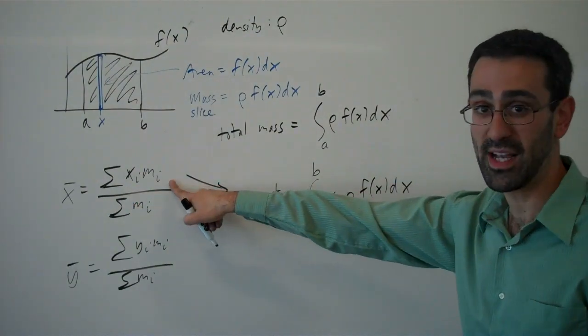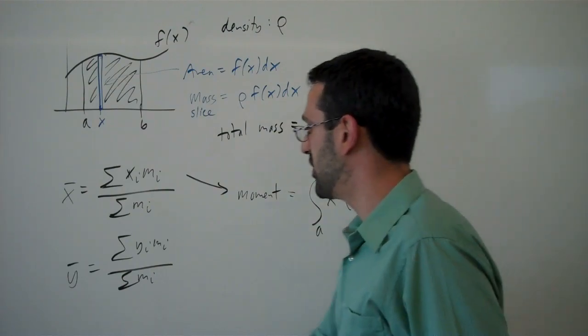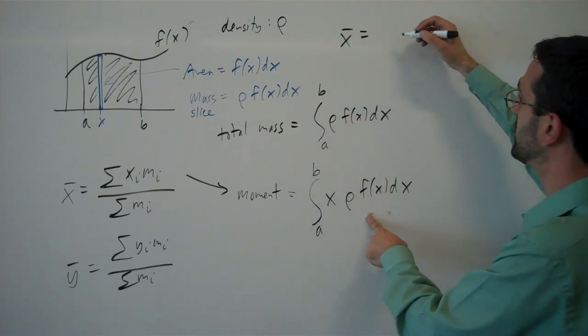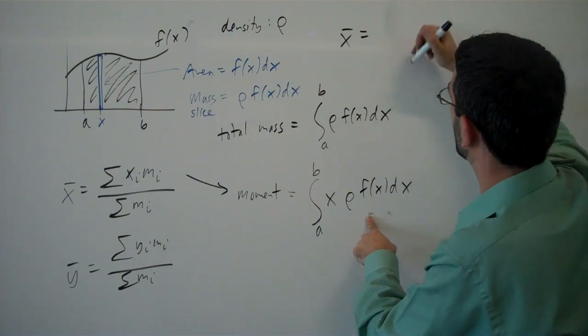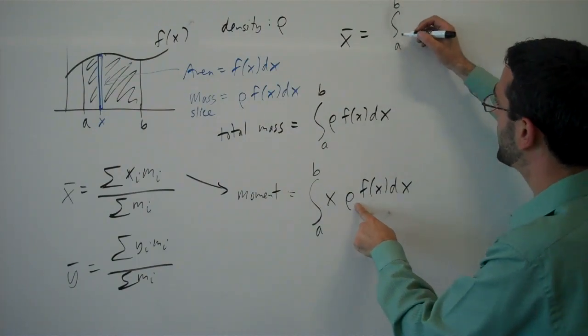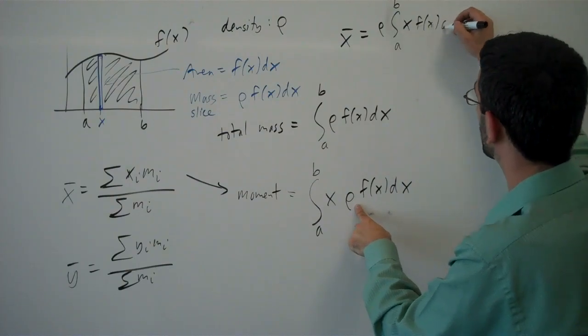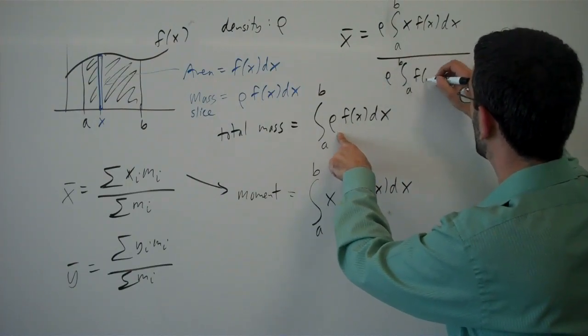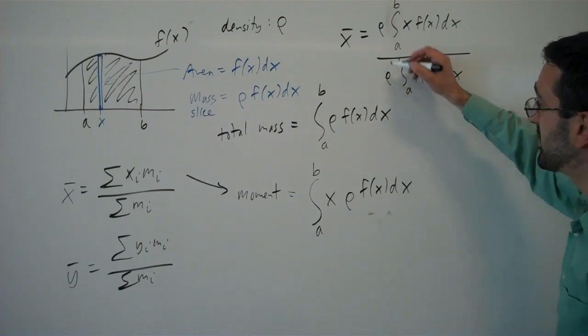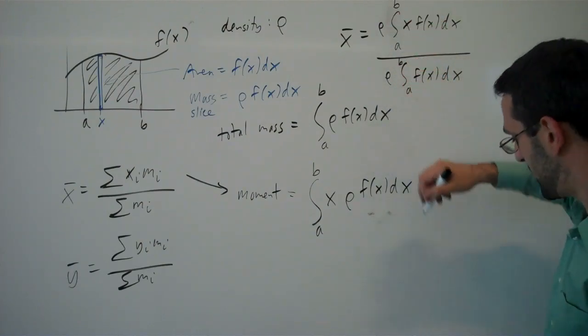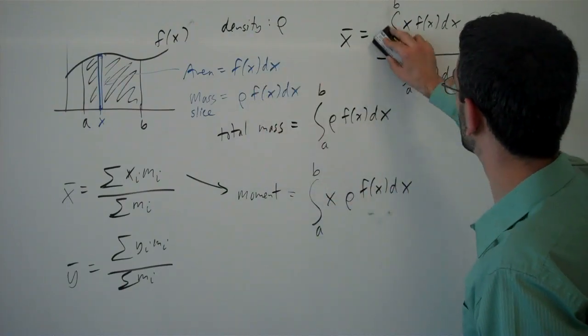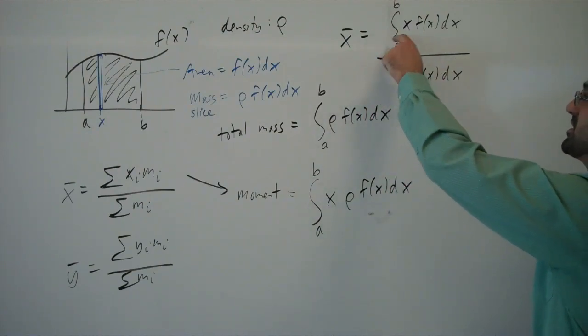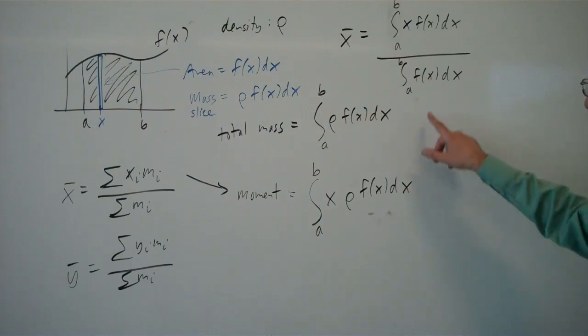And again, that's the moment about y, that's the moment for the x bar. So x bar then will be this integral from a to b, and the rho here is constant so I'm going to pull it out, x times f of x dx divided by the mass. Again, rho is constant so I can pull it out. Integral from a to b f of x dx. Notice here that the rhos are in common and will cancel out. So we can actually cancel out those densities, so the density of the material doesn't matter. And the x bar will be found as the integral of x times f of x dx over the integral of f of x dx.